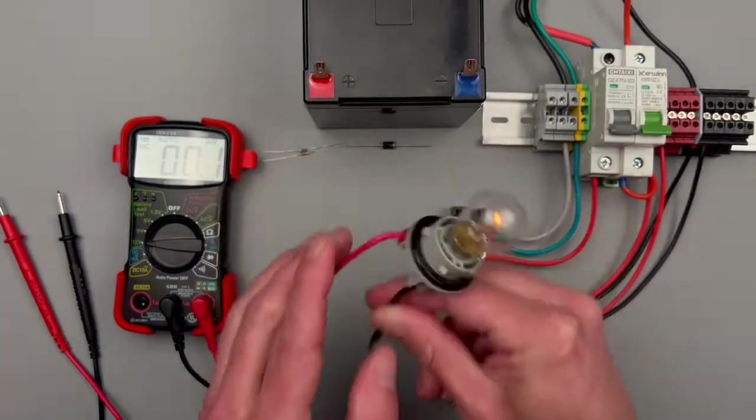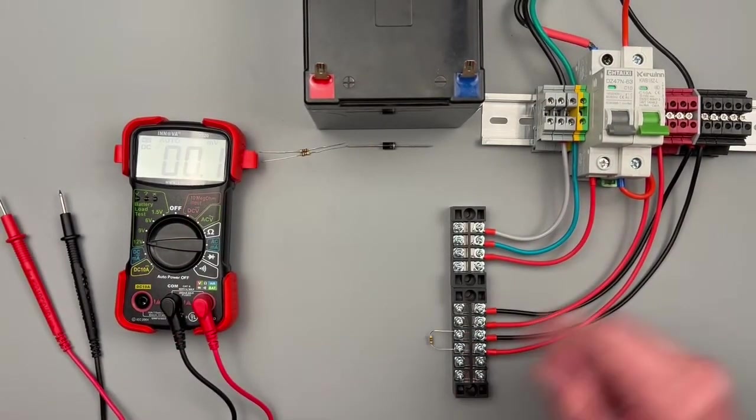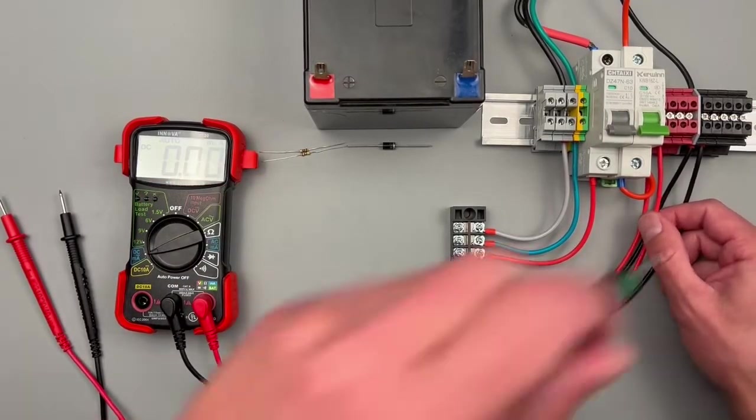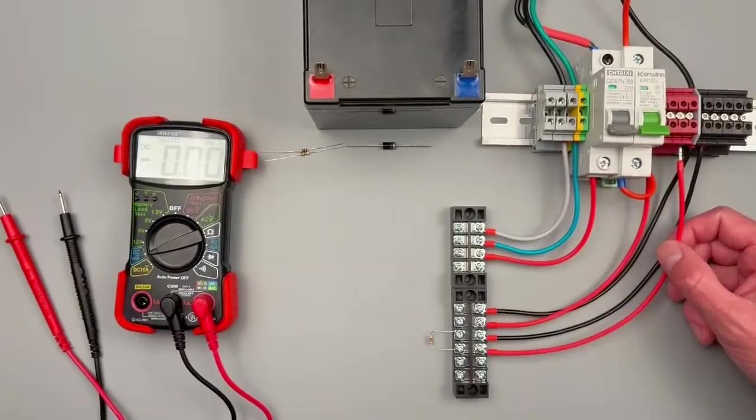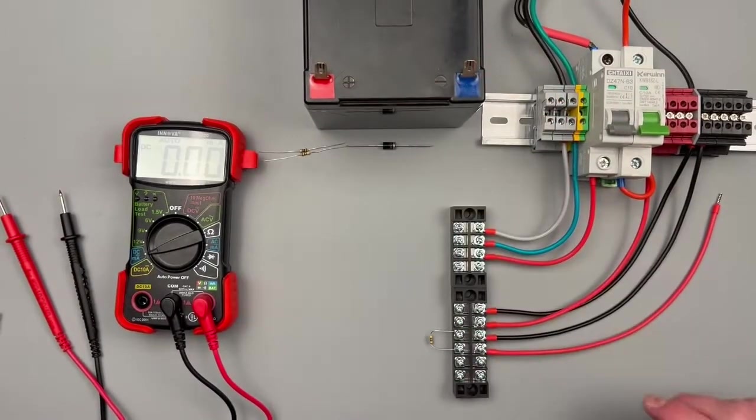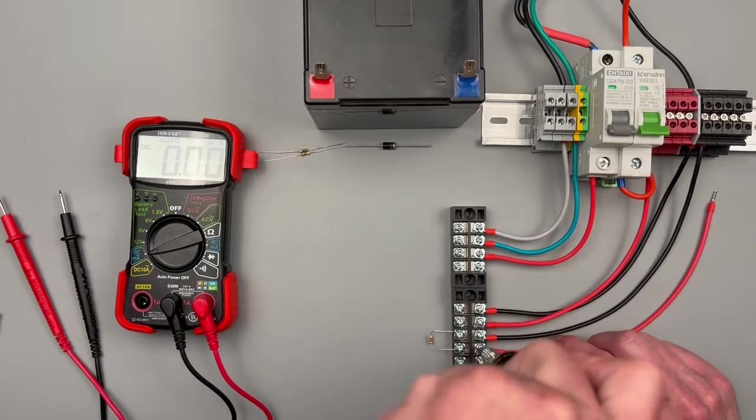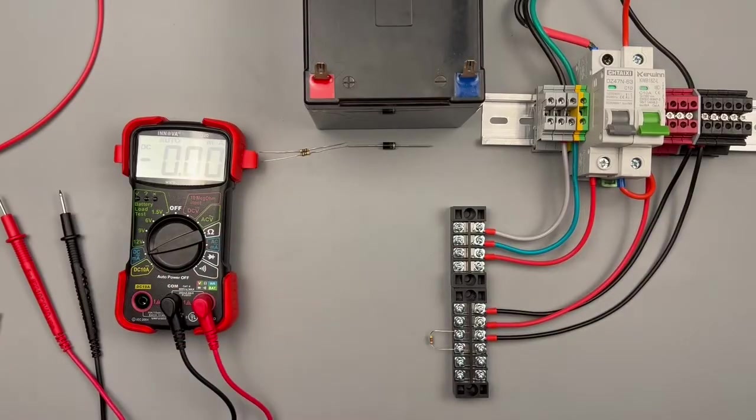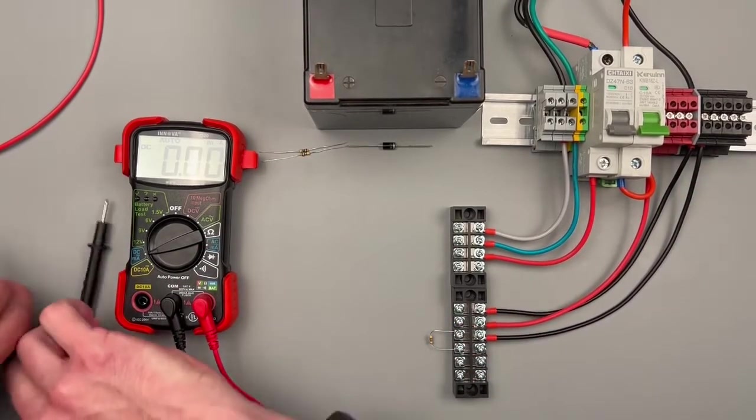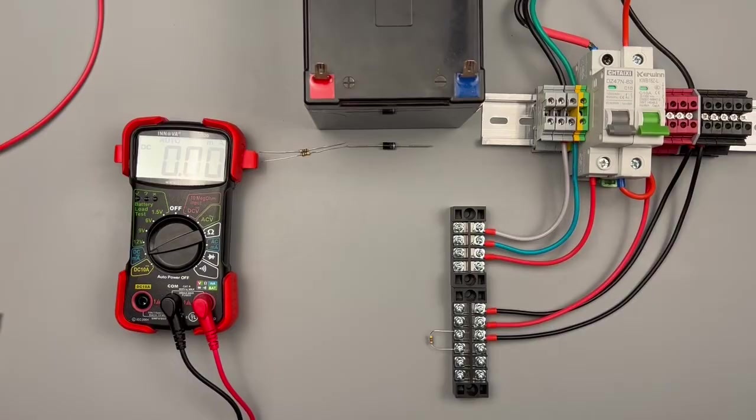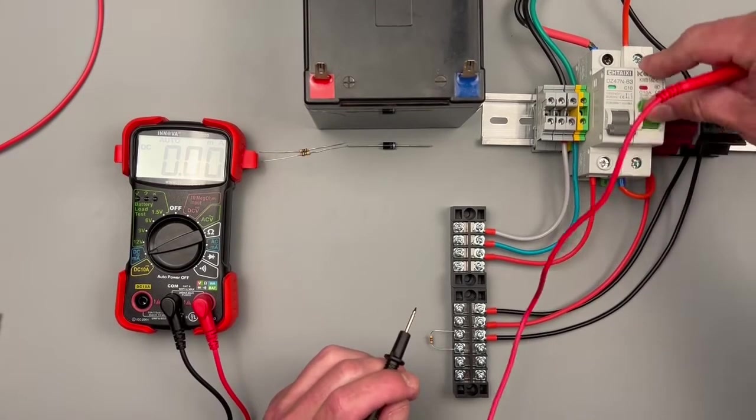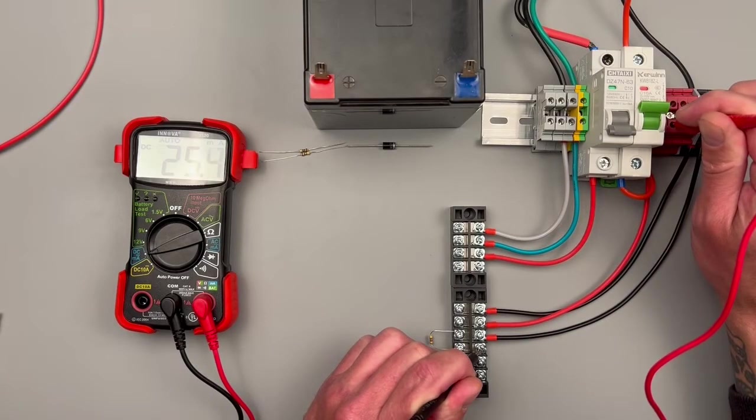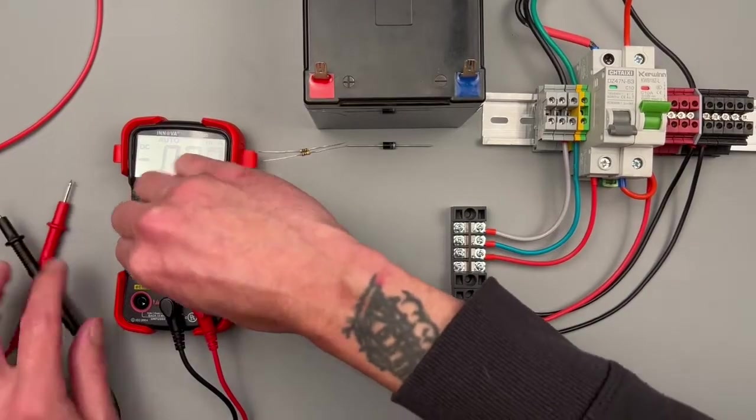Our next setting is milliamps DC. I do have an example set up for that. When we're measuring current or amperage, we need to make sure that we're doing it in series with our circuit. So I'm going to be pulling this red lead out and then using the multimeter as basically a jumper wire as a test lead. Polarity is going to be finicky with this as well. I want my red to where the power comes from and my black to where my load is. 25 milliamps, pretty cool.